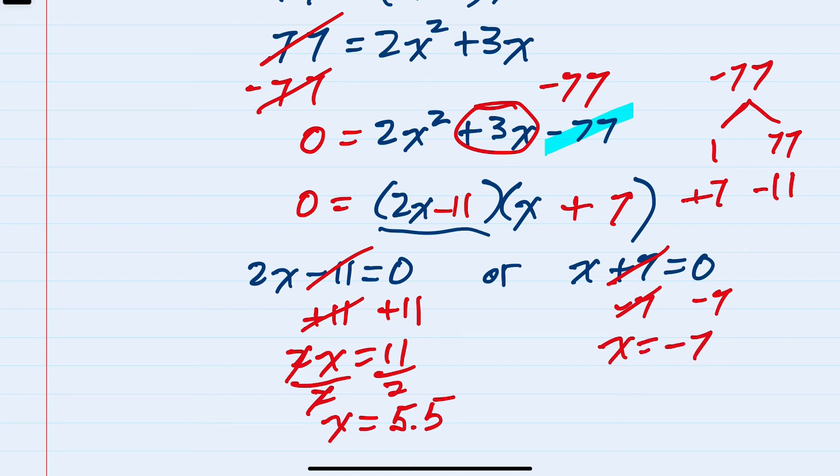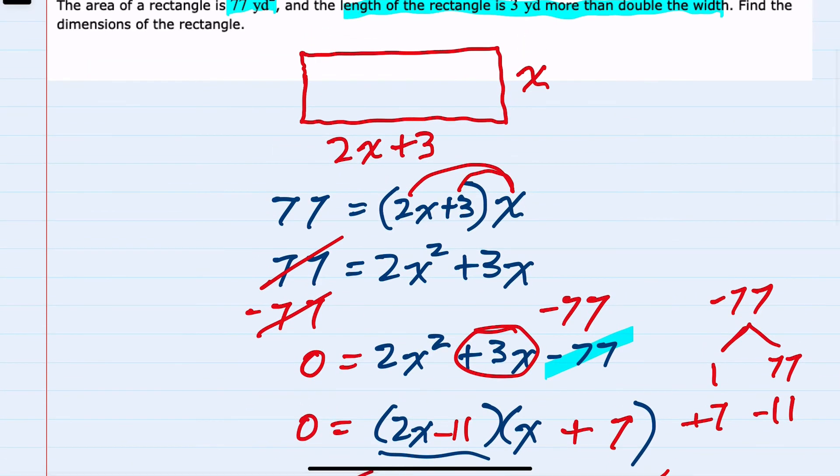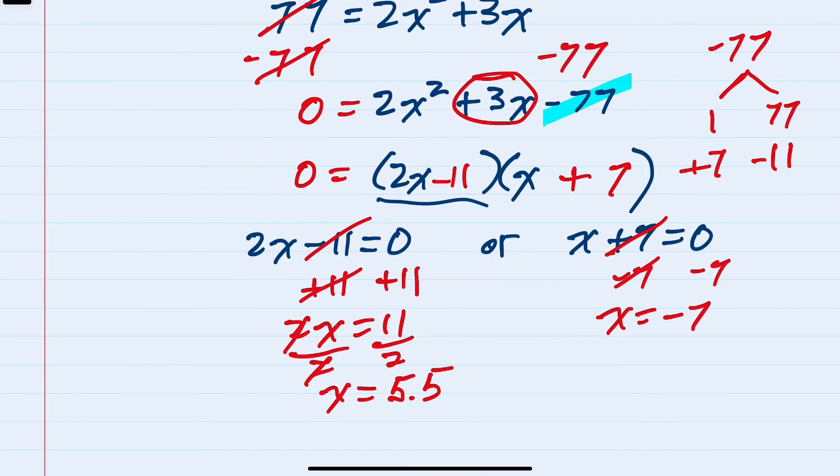So we have two possible solutions. However, recall that x is the width of the rectangle. And since it's a distance, we can't have a width of negative 7. So our width here would have to be...